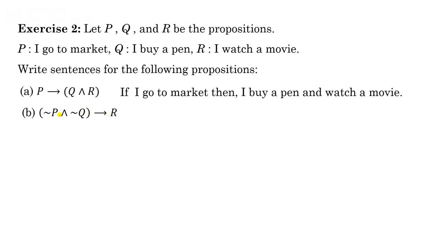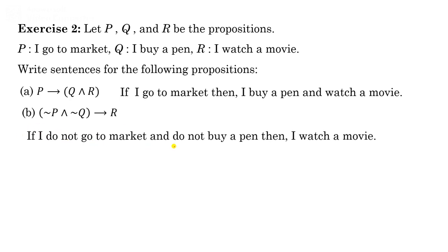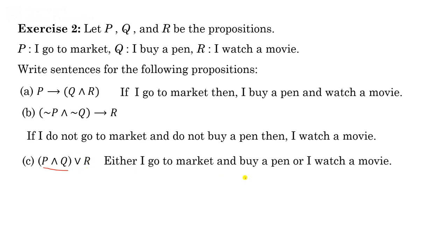Third: (P AND Q) OR R. Since we have an AND inside an OR, it is better to use 'either...or' to avoid confusion: 'Either I go to market and buy a pen, or I watch a movie.' Fourth: P AND Q AND R — simply 'I go to market and I buy a pen and I watch a movie.'